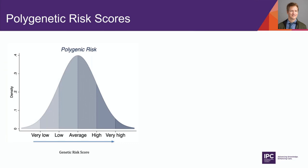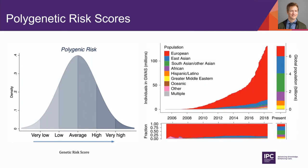The field is moving toward polygenic risk scores — using all available genetic information to stratify patients into low- and high-risk groups — which will play a major role in personalized care and treatment selection. However, the information used to calculate these scores is overwhelmingly European-based genetic data. Progress is being made but is much slower for non-European populations, so this is clearly another aspect we need to greatly improve.